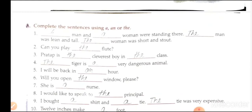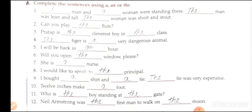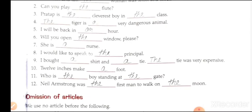Exercise: Complete the sentences using 'a,' 'an,' or 'the.' A man and a woman were standing there. The man was lean and tall; the woman was short and stout. Can you play the flute? Pratap is the cleverest boy in the class. The tiger is a very dangerous animal. I will be back in an hour. Will you open the window, please? She is a nurse. I would like to speak to the principal. I bought a shirt and a tie; the tie was very expensive. Twelve inches make a foot. Who is the boy standing at the gate? Neil Armstrong was the first man to walk on the moon.